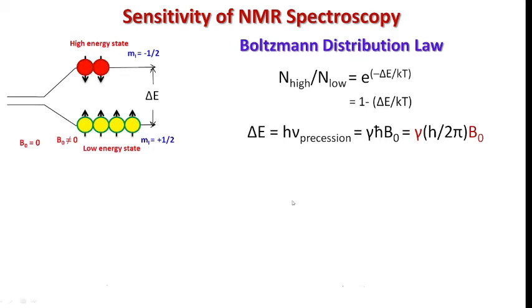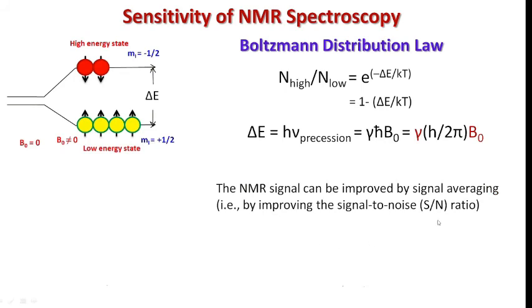On the other hand, one can improve the signal intensity by repeating the experiment for number of times to increase the signal-to-noise ratio. This is also known as signal averaging.